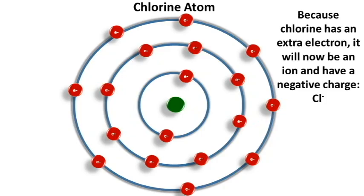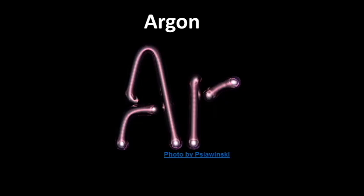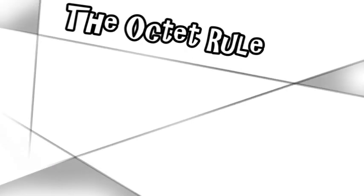That's why chlorine is a very reactive element - it just needs one more electron. When it gains one, it will have the stable electron configuration of the noble gas argon. And that is the octet rule.